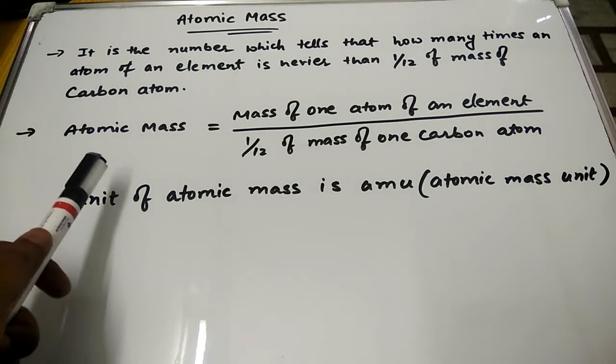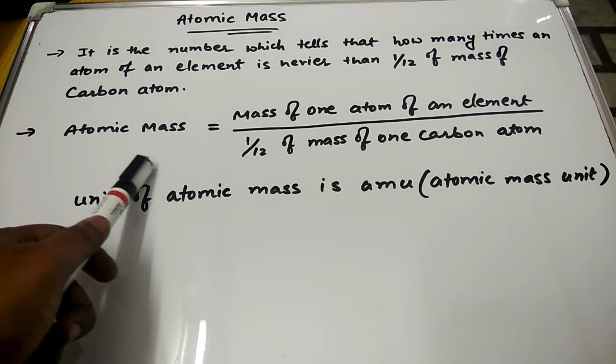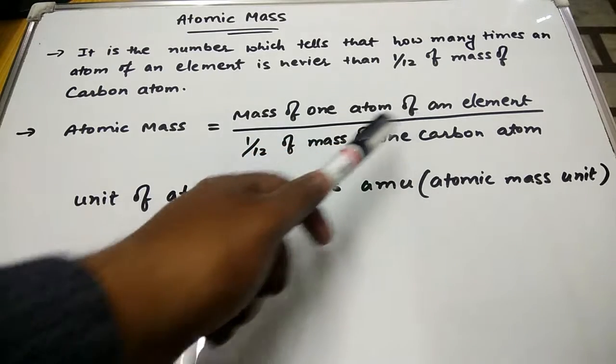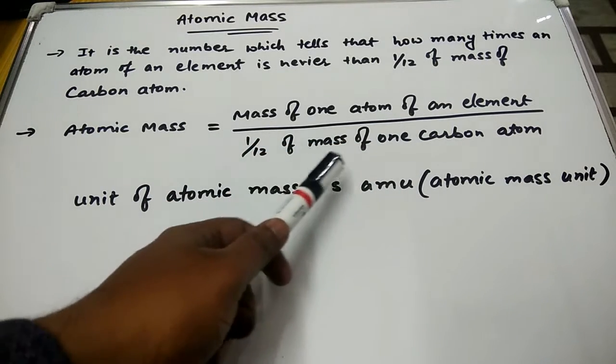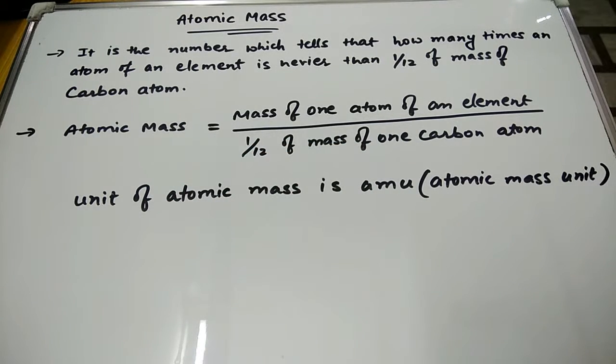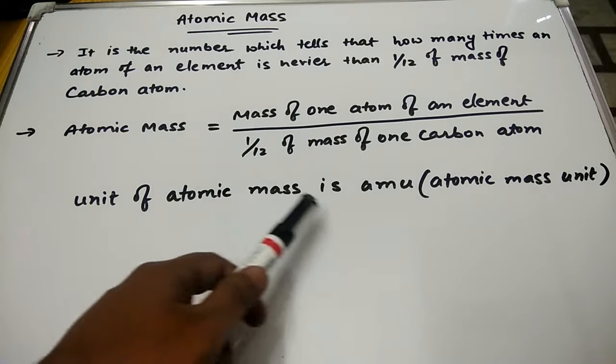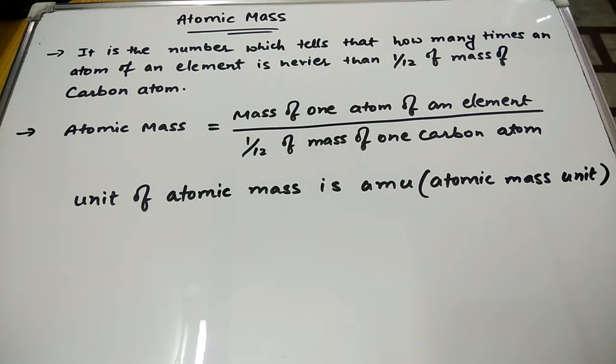We understand the formula. Atomic mass is equal to mass of 1 atom of an element divided by 1/12th of mass of 1 carbon atom. And this unit is AMU, which is atomic mass unit.